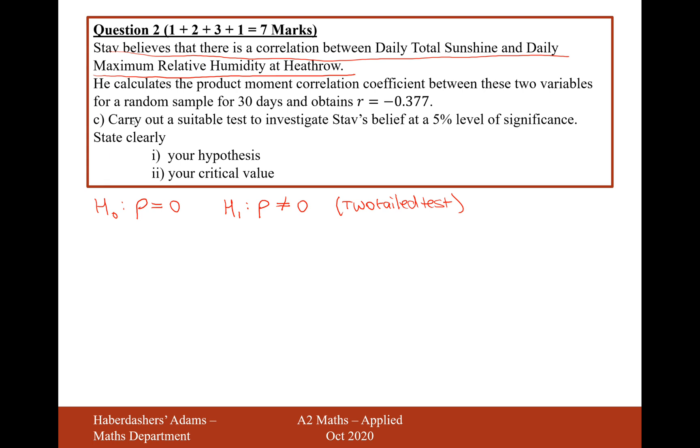Either way, part C: carry out a suitable test to investigate Stav's belief at a 5% significance level, clearly stating your hypothesis. Great, we've done that. This is a two-tailed test. Now, what that will mean is because it's to the 5% significance level, it's going to be 2.5% each side.